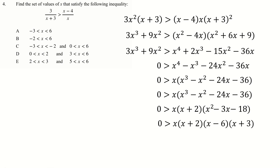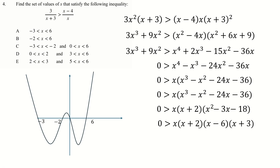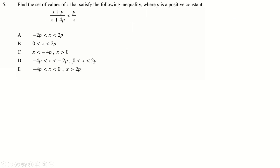So roots are at 0, minus 2, 6, and minus 3. Because it's a positive quartic, we're less than zero between all the roots — between minus 3 and minus 2, and between 0 and 6. Bear in mind, if you didn't want to do all this algebra, you could just test all the ranges by substitution to find which one is always true. That's a totally valid method.